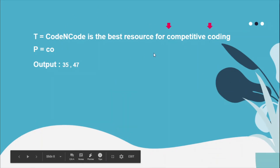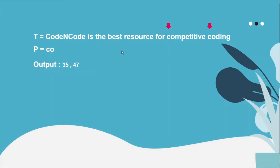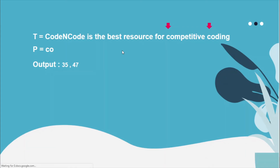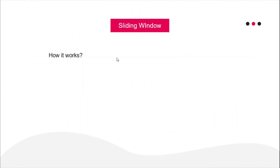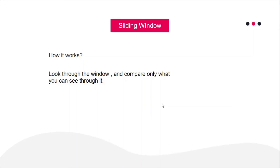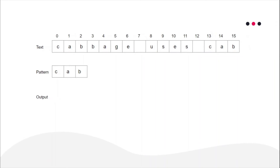So now what we were discussing is the problem statement that we will be solving using the sliding window algorithm. How does the sliding window algorithm work? As the name suggests, you look through the window and compare only what you can see through it. Here the text is 'cabbage uses cap' and this is the pattern we want to search. The output should be zero and thirteen, since 'cab' appears at position zero as well as position thirteen.